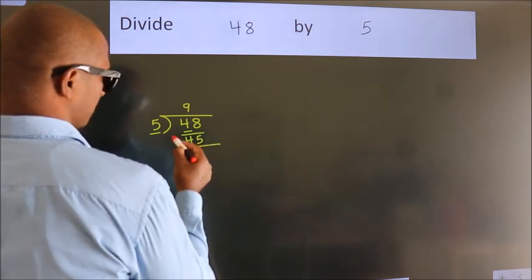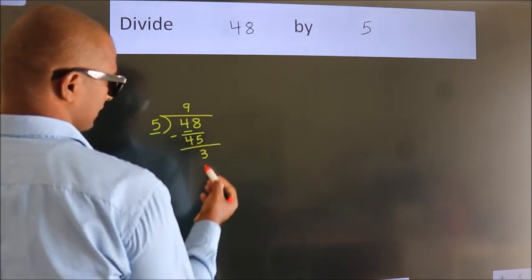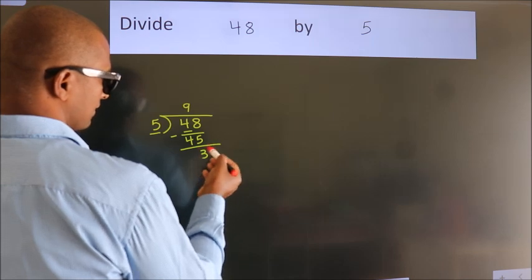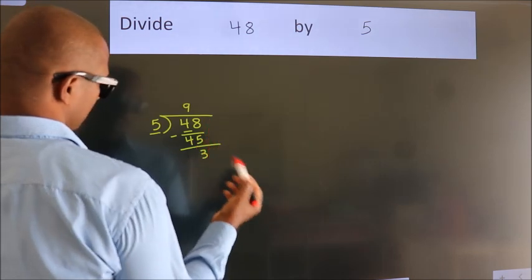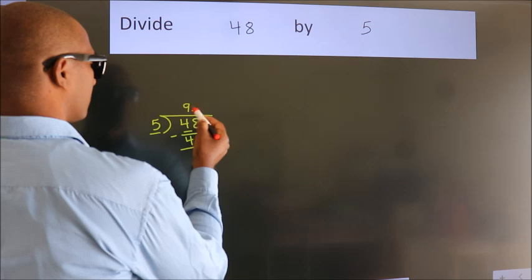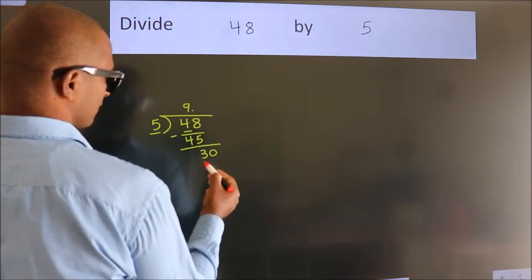Now we should subtract. We get 3. After this, no more numbers to bring down. So what we do is we put a dot and take 0. So 30.